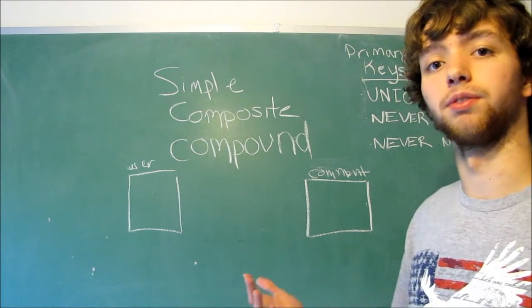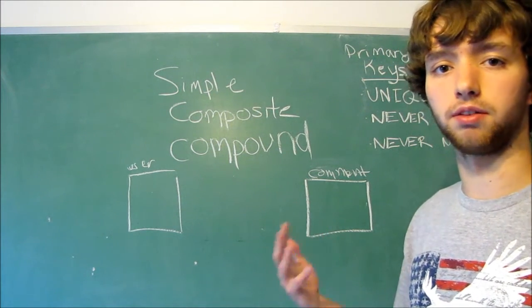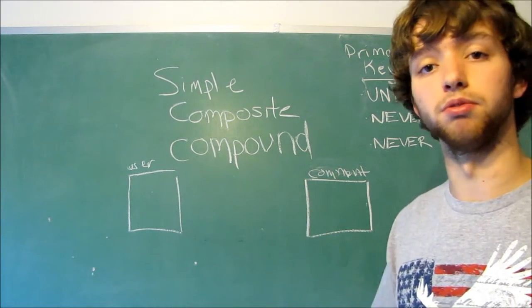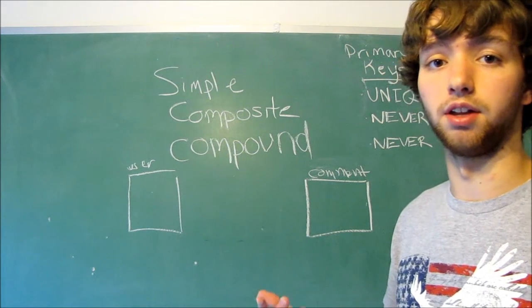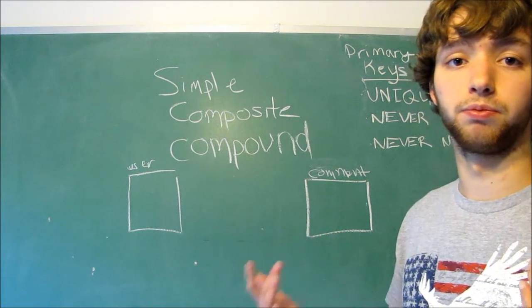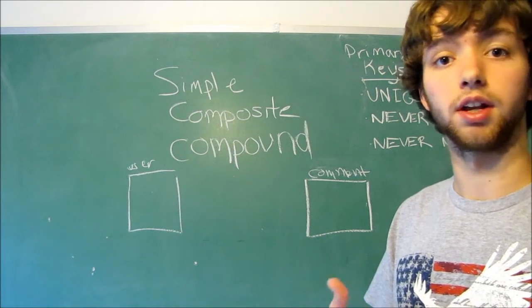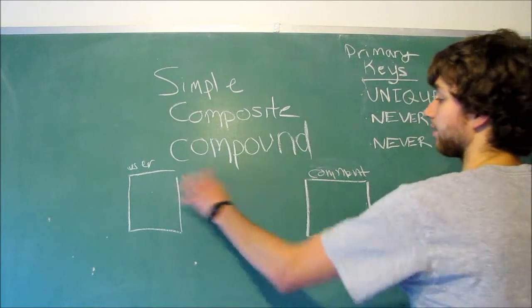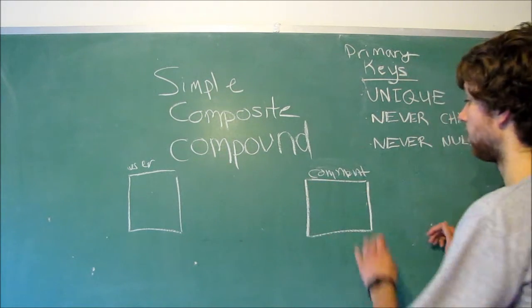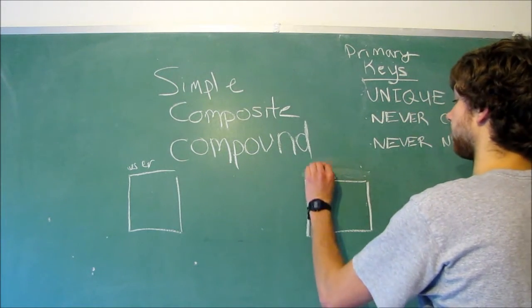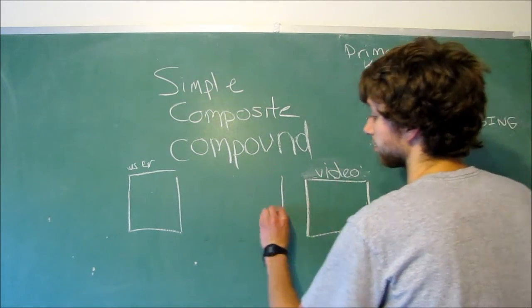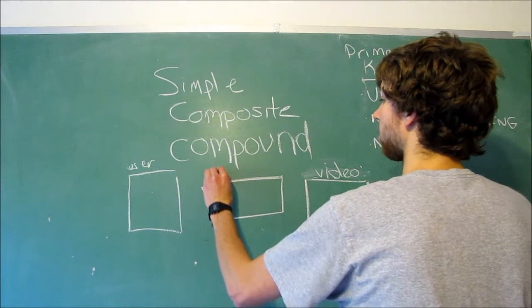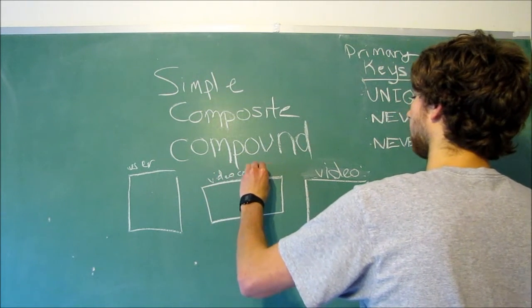So, this might not work out well with database design because one user can comment on multiple videos and then one video can have comments from multiple people. So, the best way to do this, rather than having two separate tables like this, we would create a video table and then we'd have an intermediary table and this would be video comments or user comments. You see what I'm saying?